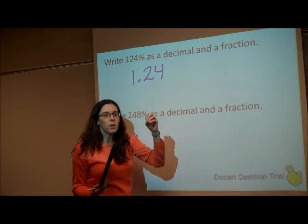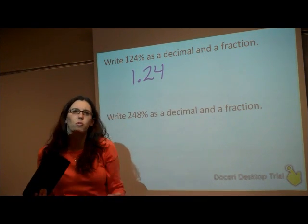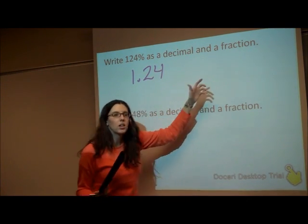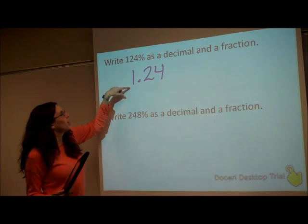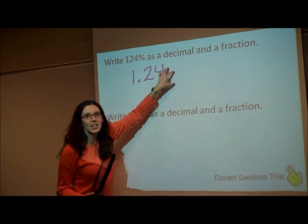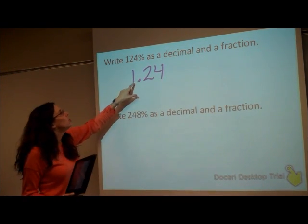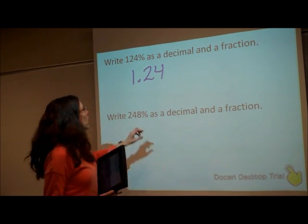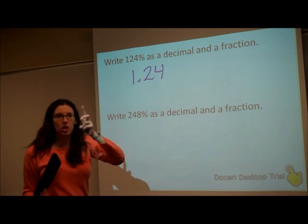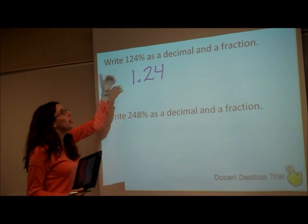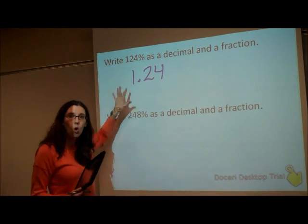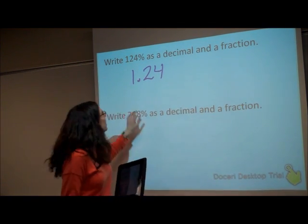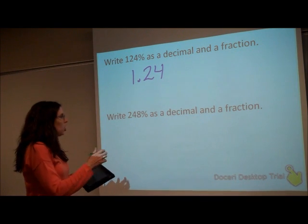Now, thinking back to when we were talking about decimals and fractions, we want to change 1.24 to a fraction. Remember, this 1 is a whole, and the decimal is a part of another whole. So when we write our fraction for these, we're going to have a mixed number. We did this back with decimals when we changed between decimals and fractions — we had one whole box and a part of another. So it would be like 1 and 1-half. Let's figure out what this one would be as a fraction.